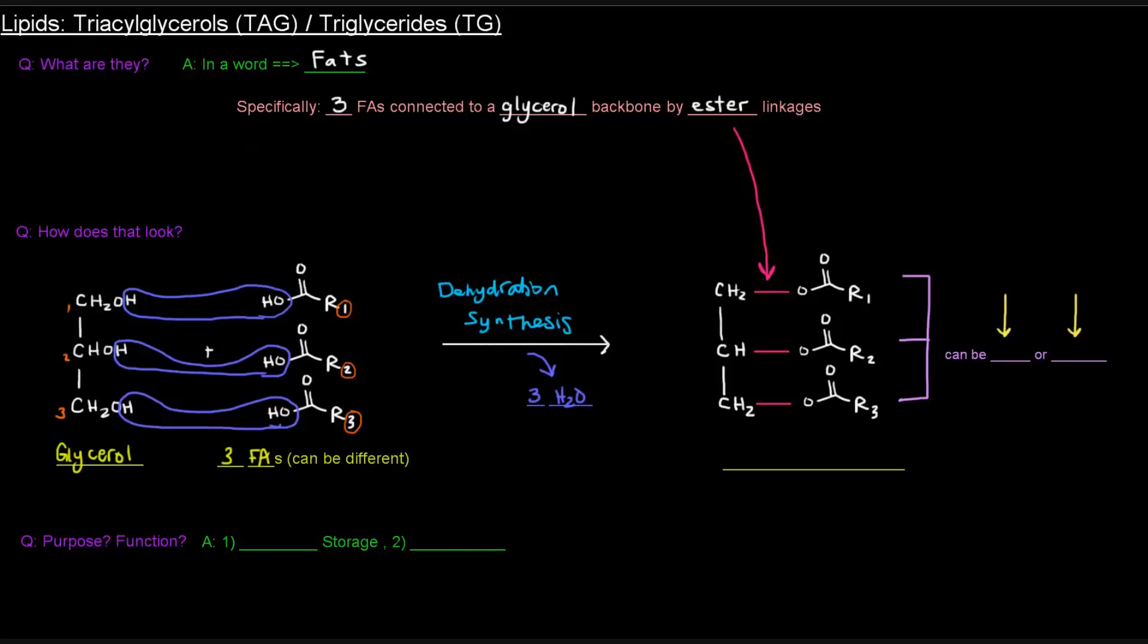And an ester, if you aren't already familiar with it, is when you have an R group bound to a carbonyl that's bound to an OR group. And those R groups can be just any hydrocarbon chain, and they can be the same or different. Here we've got these three fatty acids that are linked via an ester linkage to this glycerol backbone. This molecule here is a triacylglycerol, or TAG, or a triglyceride, TG. Both of those terms mean the same thing.